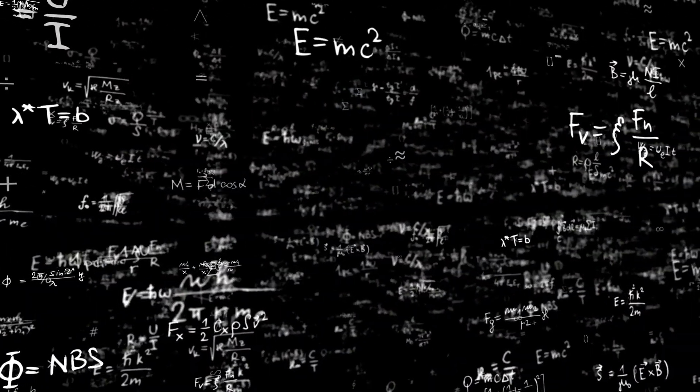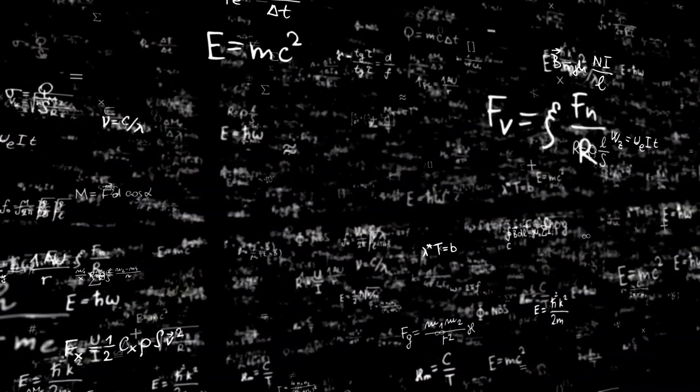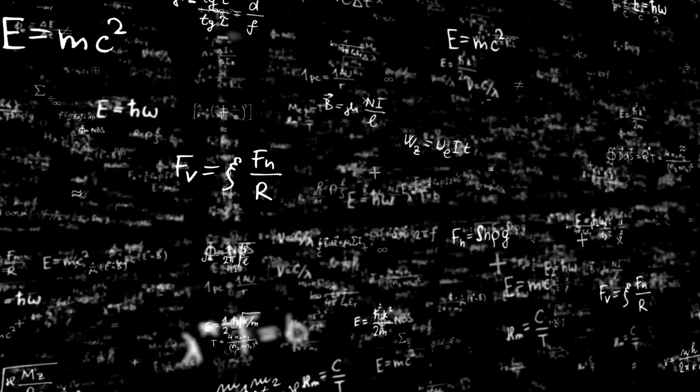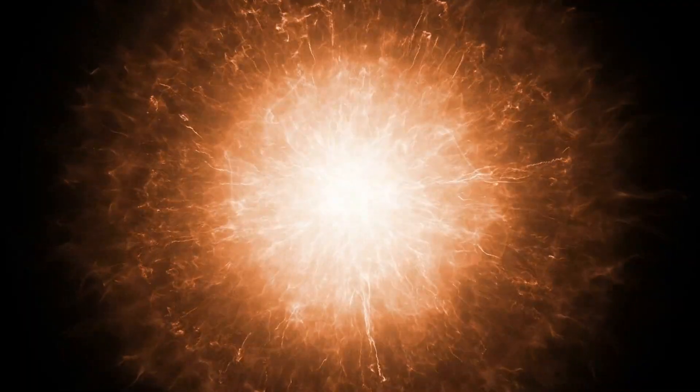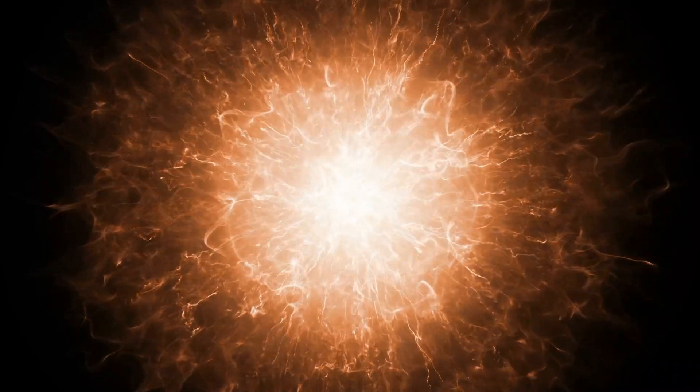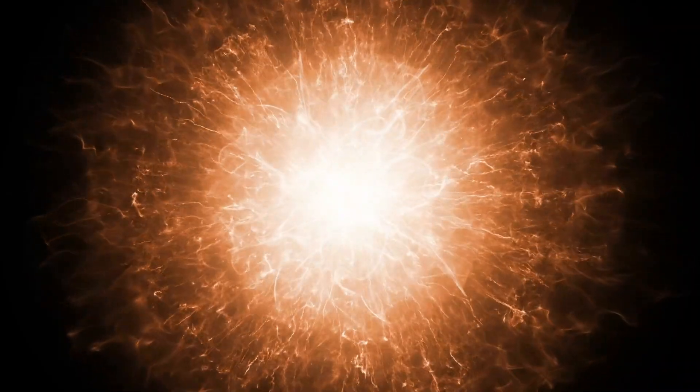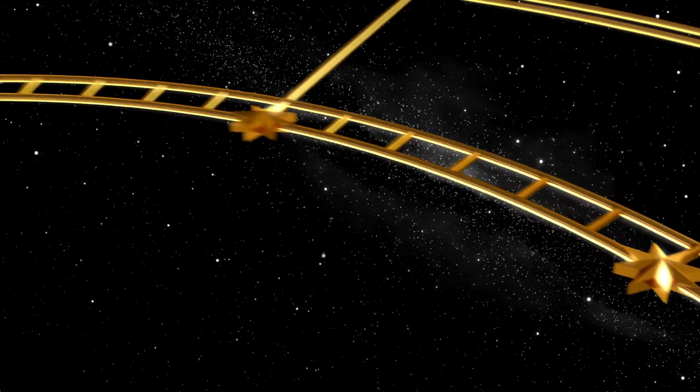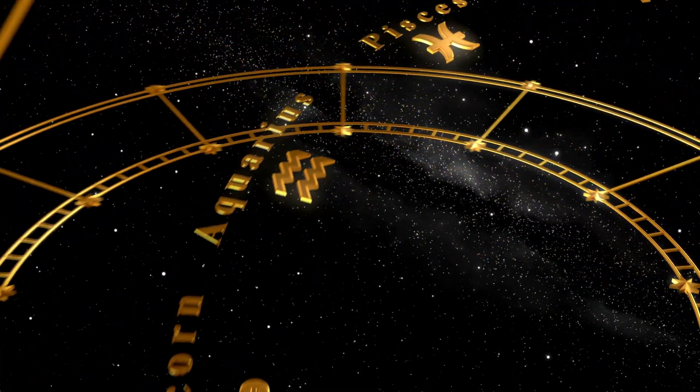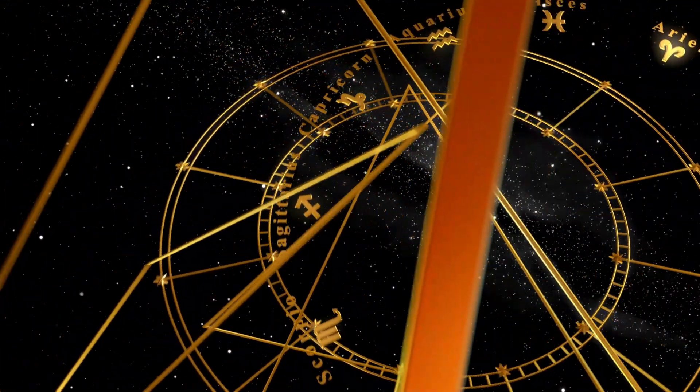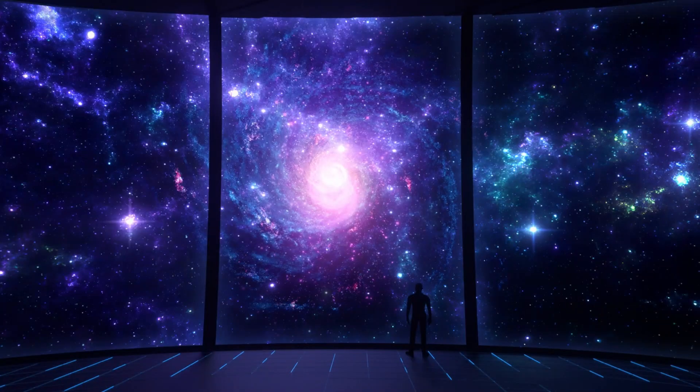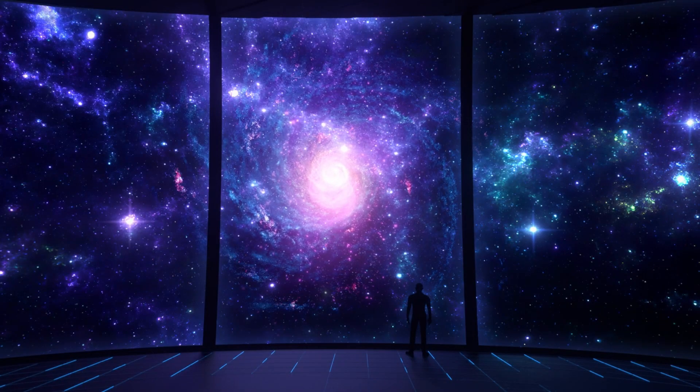But where did these particles originate in the first place? Quantum field theory suggests that even a vacuum, which we often consider empty space, is teeming with activity in the form of energy fluctuations. These fluctuations can result in particles that appear and disappear almost instantaneously, which has been observed in countless experiments. Thus, even the vacuum of space is not nothing, but rather an energetic field that fluctuates unpredictably.